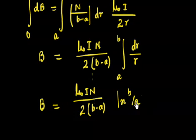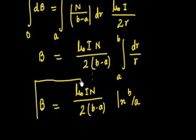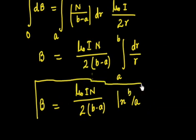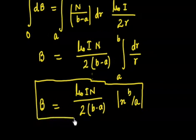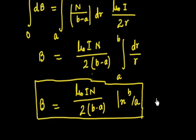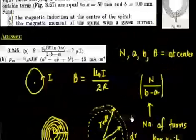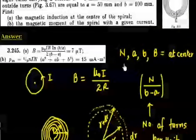So the total magnetic field is B = μ₀IN / [2(B − A)] × ln(B/A). This is the magnetic field at the center due to the spiral, which is what we had to find in the first part of the question.